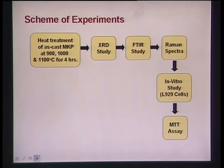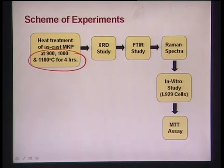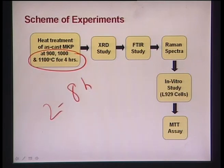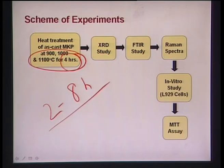After slip casting, heat treatment was performed at different temperatures — 900 to 1100°C. The heat treatment time was optimized by running experiments at 2, 4, 6, and 8 hours, and 4 hours was found to be the optimum. Further experiments were carried out at this temperature range for 4 hours.